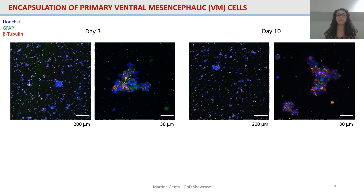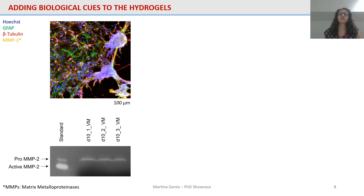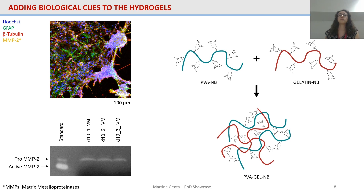These metallic materials are characterized by high stiffnesses — young moduli in the range of hundreds of gigapascals. This leads to poor biointegration when implanted within the human body because there is a mechanical mismatch between the high stiffness of metals and the low stiffness of human tissue, particularly brain tissue, which sits in the range of kilopascals. This mismatch leads to the formation of a glial scar surrounding the implant, which causes a decrease in long-term device performance and a decrease in signal-to-noise ratio.